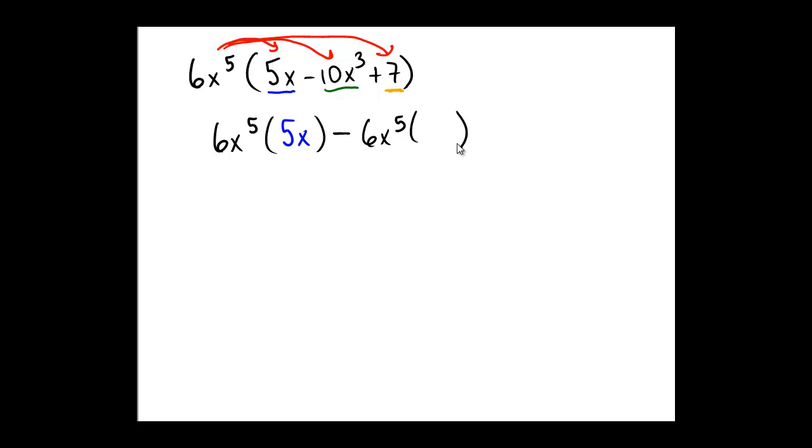and that's going to be multiplied by 10x cubed, because that's the green part. And then our next connector symbol is a plus sign, 6x to the 5th. And in the last instance, we're going to be multiplied by the number 7.